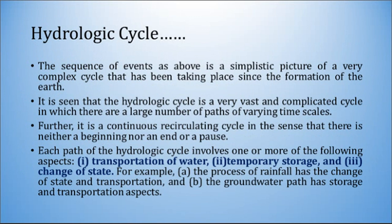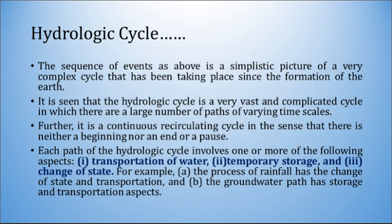The sequence of events described is a simplistic picture of a very complex cycle that has been taking place since the formation of the earth. The hydrologic cycle is a very vast and complicated cycle in which there are a large number of paths of varying time scales. It is a continuous recirculating cycle in the sense that there is neither a beginning nor an end nor a pause. Each path of the hydrologic cycle involves one or more of the following aspects: transportation of water, temporary storage, and change of state. For example, the process of rainfall involves change of state and transportation, while the groundwater path has storage and transportation aspects.